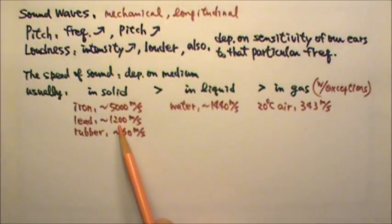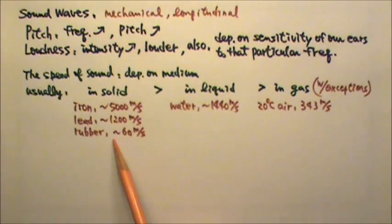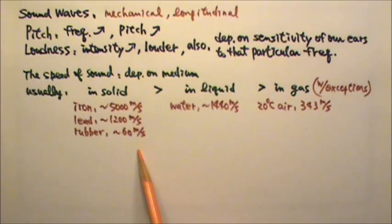In lead, it's about 1200 meters per second. And in rubber, it's only about 60 meters per second. As you can see, the speed of sound in solid has a really wide range. And it is slower in softer solids.